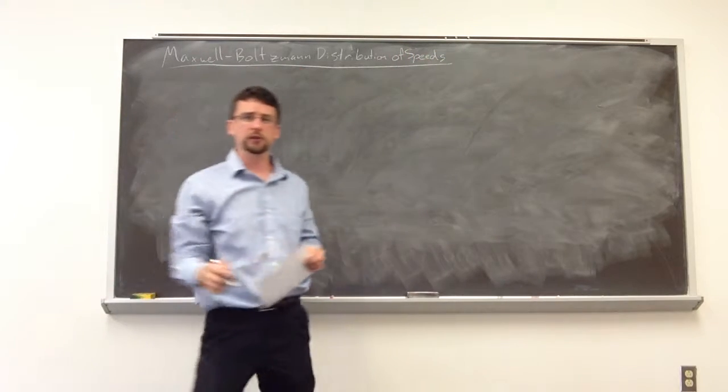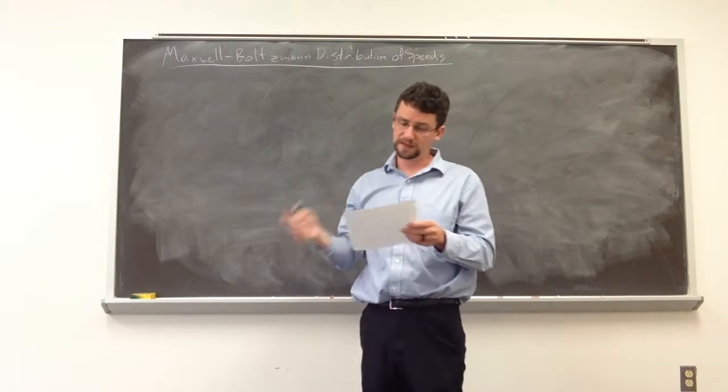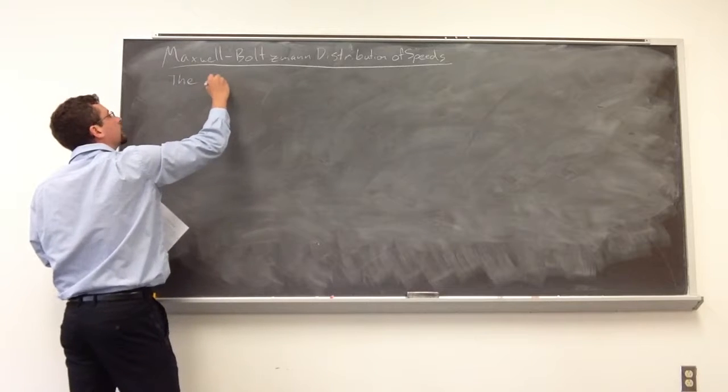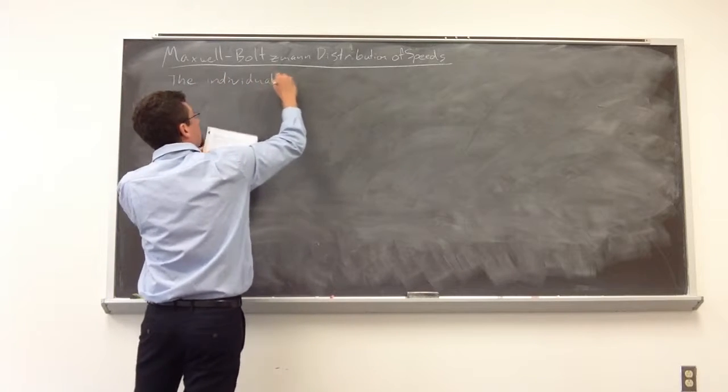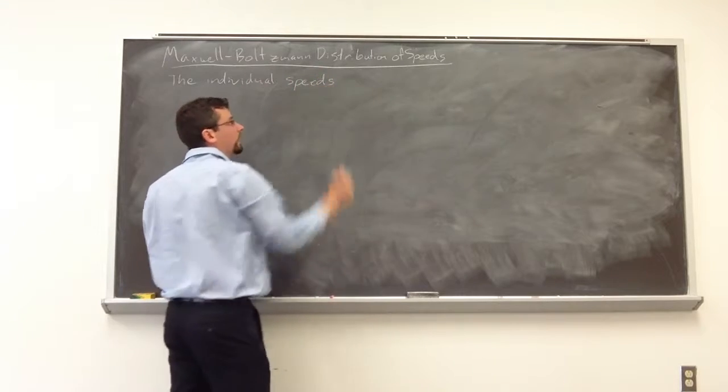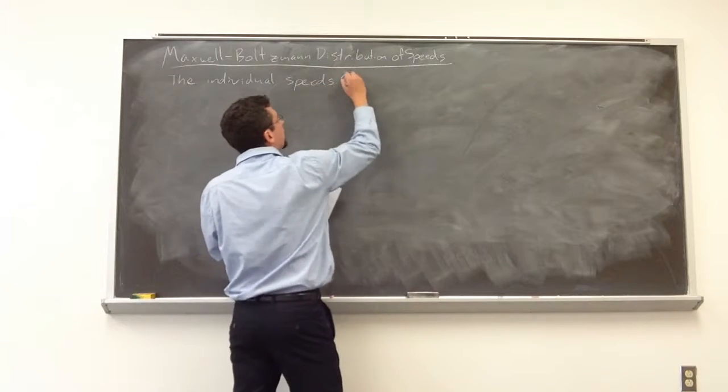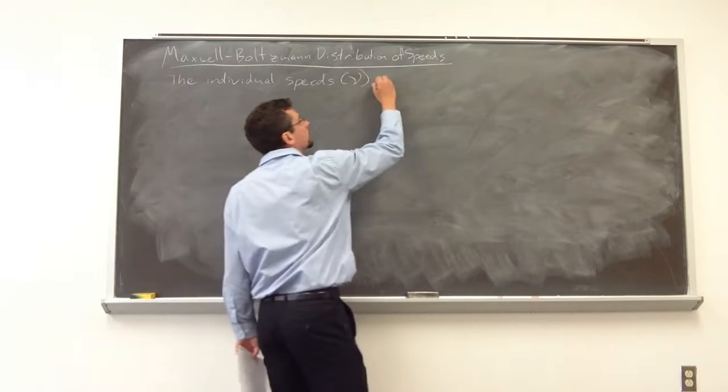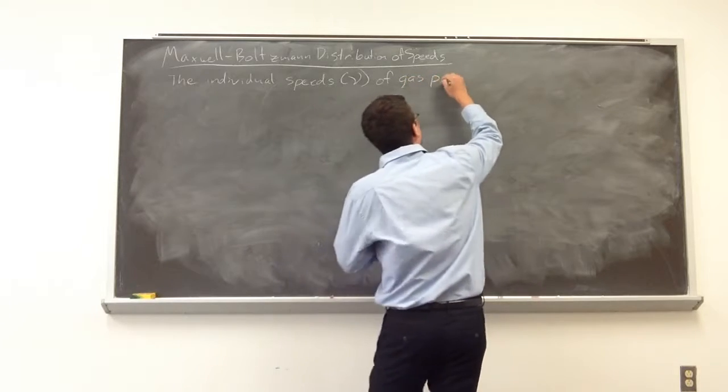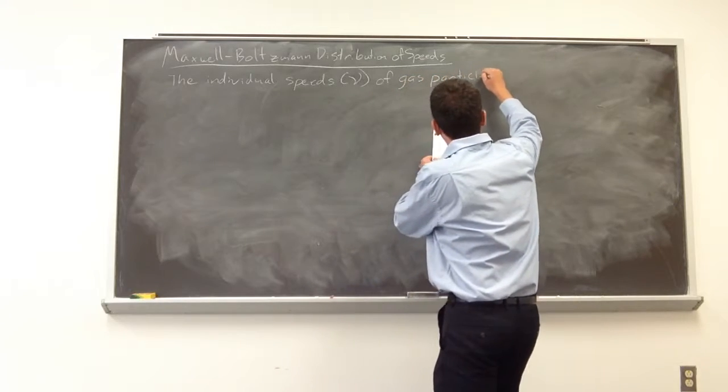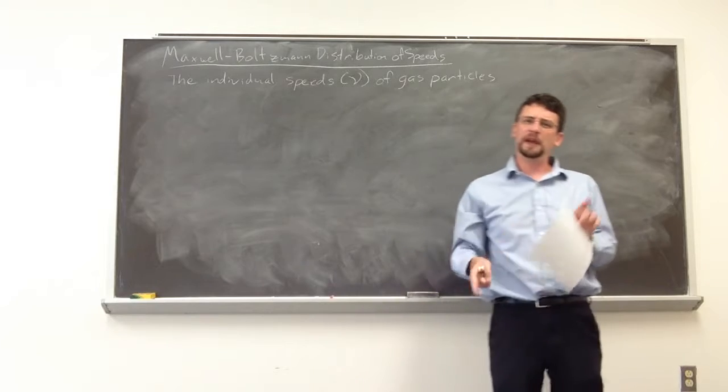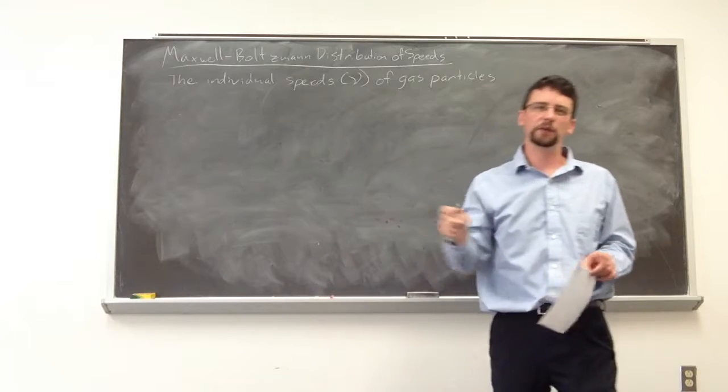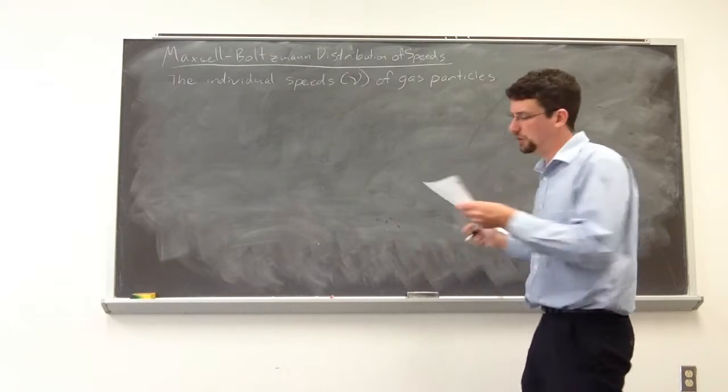So we're talking about the Maxwell distribution of speeds of different gas particles as they start to oscillate around. So the individual speeds of gas particles span a wide range because not all the gas particles are moving at the same rate. Some are bumping into the wall which means they're moving at a bit different rate. They're smacking into each other.